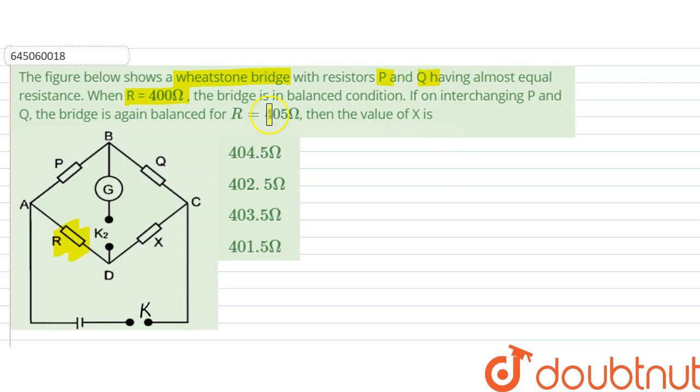If on interchanging P and Q, the bridge is again balanced for R equals to 405 ohm. Then the value of X is what?